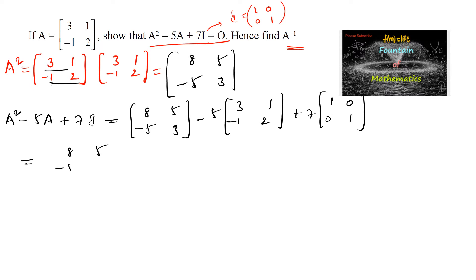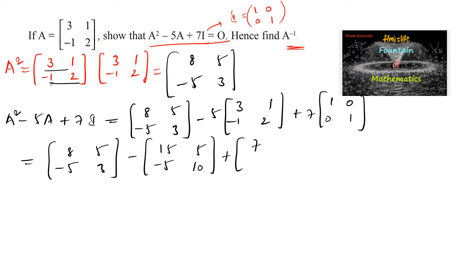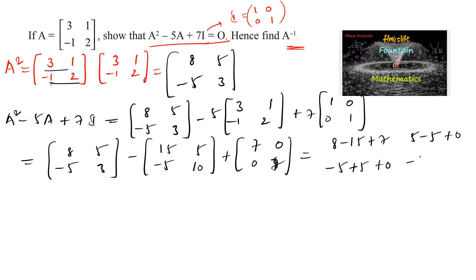We can write this as [[8,5],[-5,3]] minus [[15,5],[-5,10]] plus [[7,0],[0,7]]. On simplifying: first element 8 minus 15 plus 7 = 0, second element 5 minus 5 plus 0 = 0, third element -5 plus 5 plus 0 = 0, fourth element 3 minus 10 plus 7 = 0. So we get the zero matrix, and hence proved.